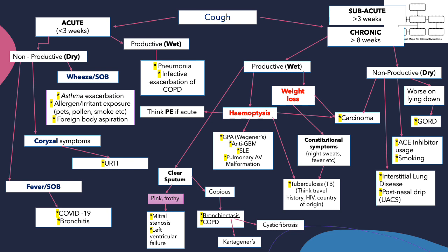This is the concept map for cough. I know it looks complicated, but I will go through it with you. Once you split your cough into whether it's acute or chronic, into whether it's productive or not, and into its associated features, you'll have a better idea of what could be going on. An acute cough that is wet and productive with sputum should get you thinking about pneumonia or infective exacerbation of COPD. An acute cough that is dry with wheeze and shortness of breath should get you thinking about asthma, allergens, irritant exposure, or foreign body aspiration. An acute cough that is dry with coryza symptoms should get you thinking about upper respiratory tract infection. An acute dry cough with fever and shortness of breath — you should start thinking about COVID.